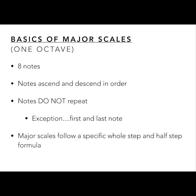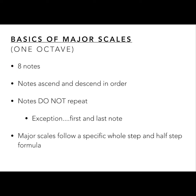The basics are that any one octave scale will have eight notes. That's where the word octave comes from. If you're thinking about math, you have the word octagon, which means eight sides. So eight notes for this scale. Notes ascend and descend in order — that means notes go up and down in order.